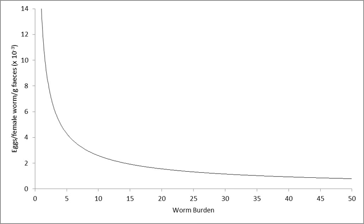In Culex mosquitoes, which lack a well-developed cibarial armature, restriction processes predominate. Thus, the number of L3 larvae per mosquito declines as the number of ingested microfilariae increases.